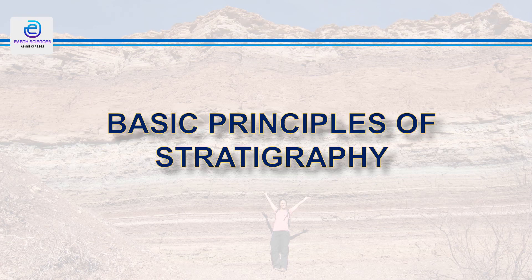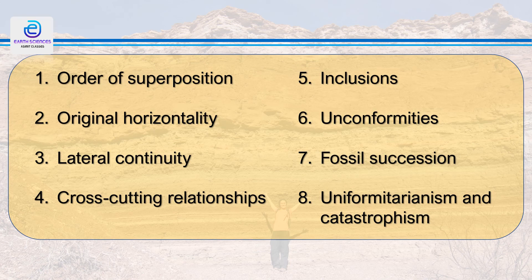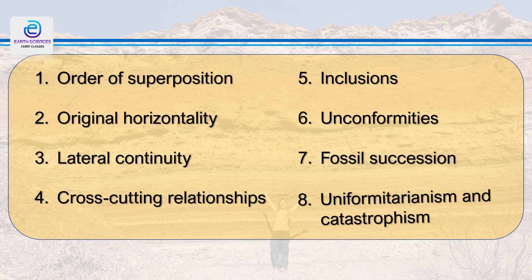Stratigraphy is based on a set of principles that govern the processes of sedimentation. Sedimentation is the result of accumulation of rock material carried by different agencies like water, wind, and glacier, and deposited in a basin. The principles of stratigraphy include: order of superposition, original horizontality, lateral continuity, cross-cutting relationships, principle of inclusion, principle of unconformities, fossil successions, and uniformitarianism and catastrophism.